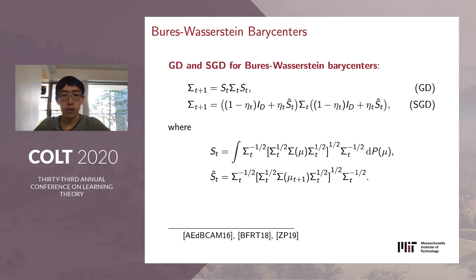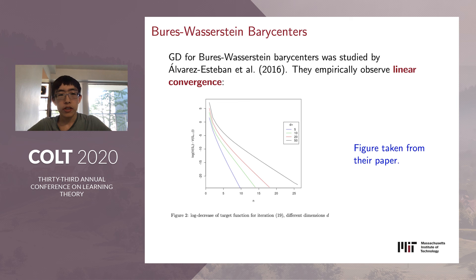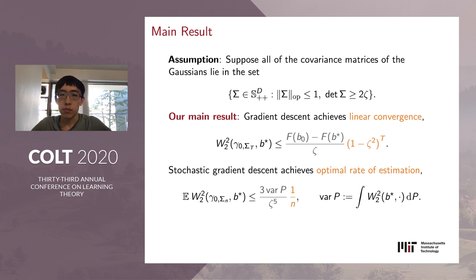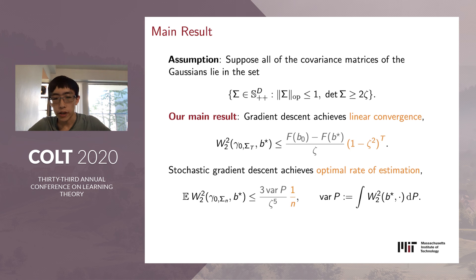These gradient descent updates were studied in a previous paper by Alvarez Esteban et al. in 2016, where they noticed empirically that gradient descent seems to converge at a linear rate. Using the general tools of Wasserstein space developed in our paper, we prove the main result in the Bures-Wasserstein setting: under the assumption that covariance matrices of the Gaussians have eigenvalues that are upper and lower bounded, gradient descent does indeed converge linearly, verifying the observations of Alvarez Esteban et al. Moreover, stochastic gradient descent produces an estimator after n samples which converges to the true population barycenter at rate 1 over n—the optimal statistical rate of estimation.